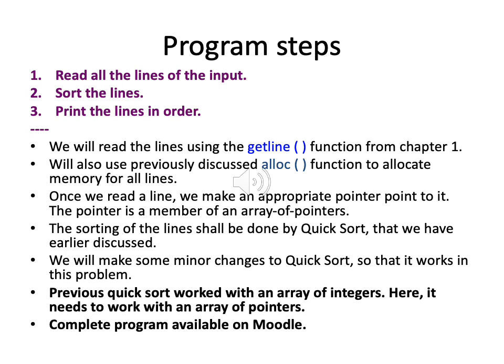Once we read a line, we make an appropriate pointer point to it — this pointer is a member of our main data structure, the array of pointers. The sorting of the lines will be done by quicksort, which has been discussed earlier. We do need to make some small changes to it because the earlier version worked with an array of integers, whereas this one needs to work with an array of pointers, each pointer pointing to a text line. Surprisingly, the changes that have to be made to quicksort are going to be very minimal.